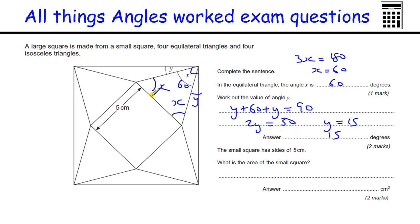The small square has sides of 5. What is the area of the small square? So the sides are 5. 5 times 5 equals 25.